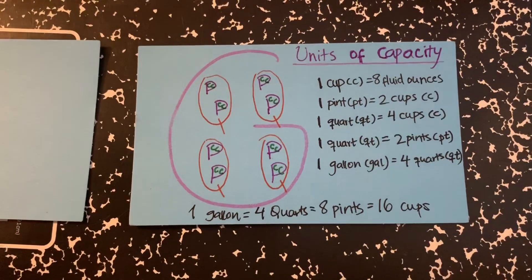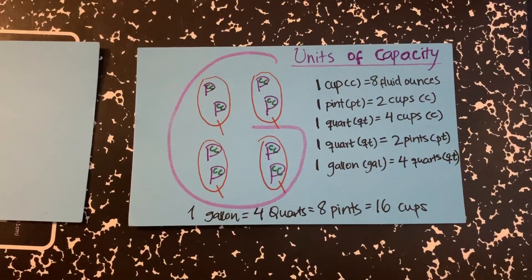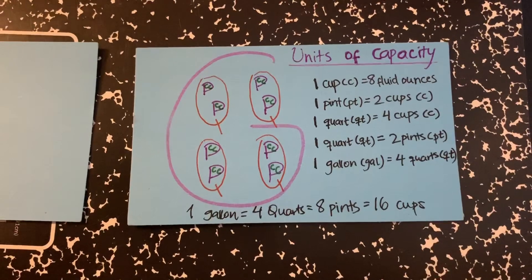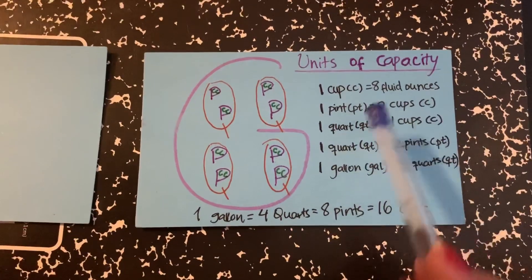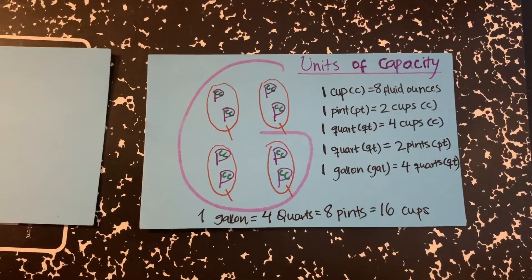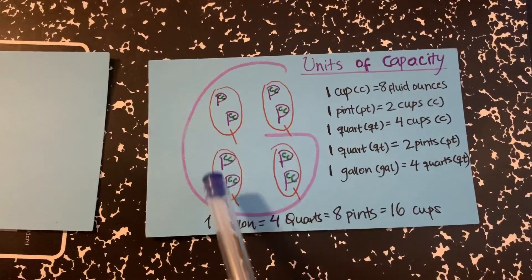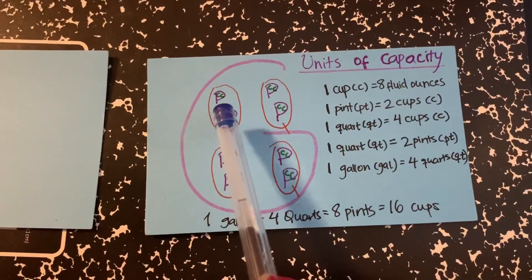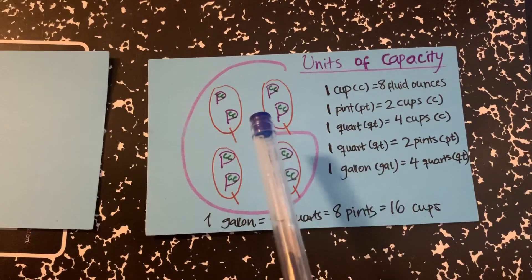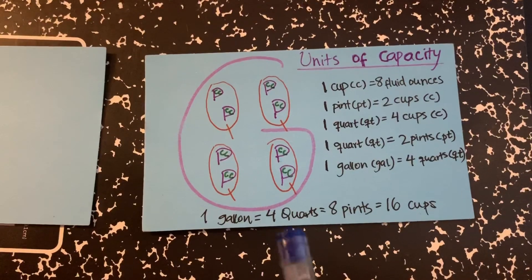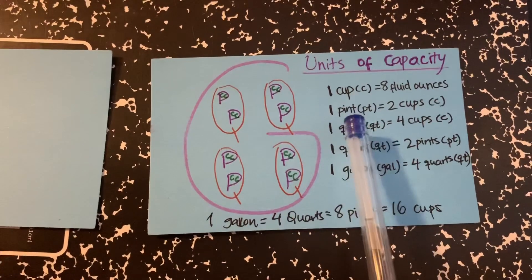Now for the units of capacity, I actually have a very nice diagram that makes you memorize it really fast. All these conversions. So how can you memorize it? You draw this diagram. You draw a G, then 4 Qs, then in each Q you draw 2 Bs, and in each B you draw 2 Cs. So what it tells you is that you start from here.